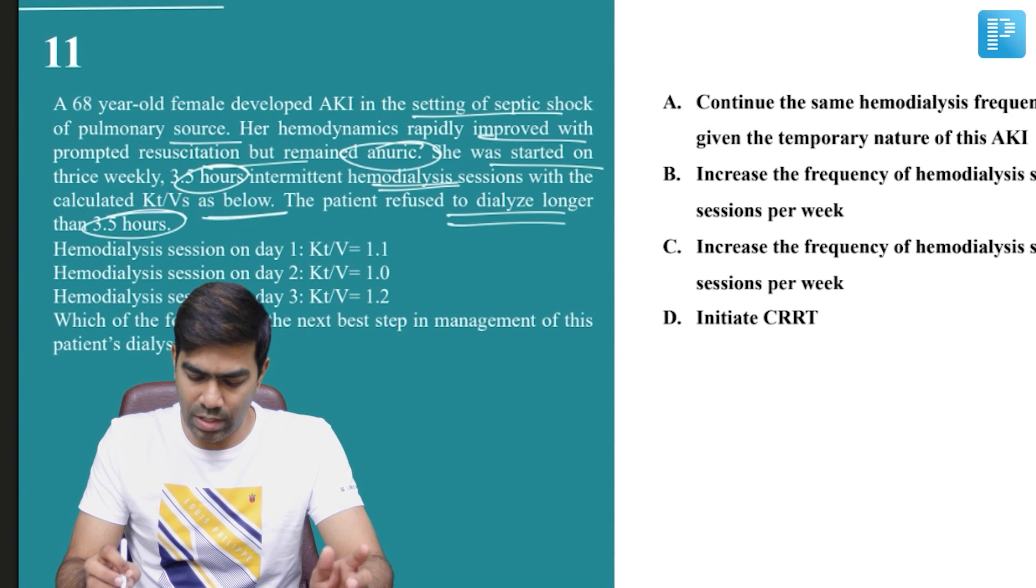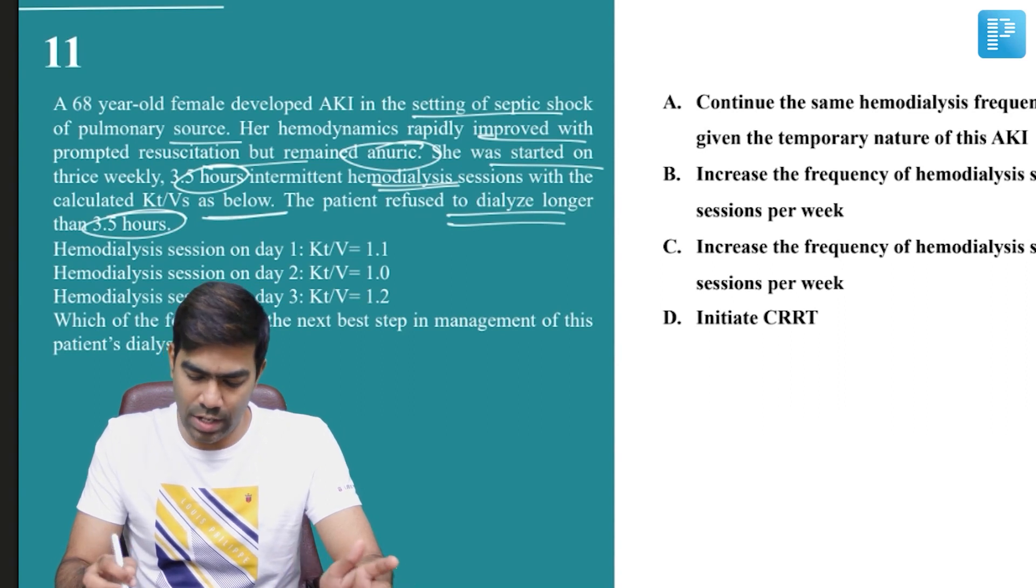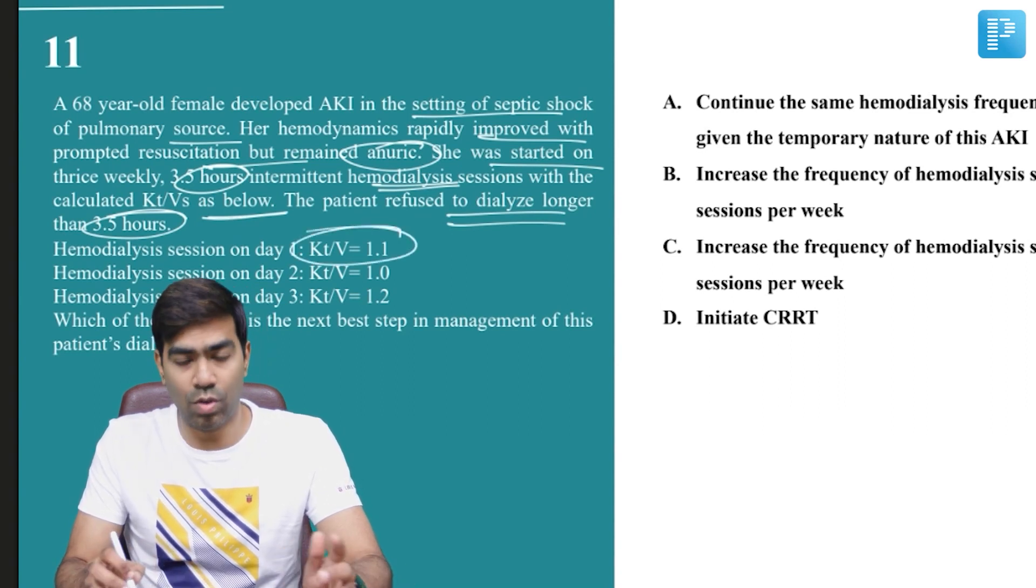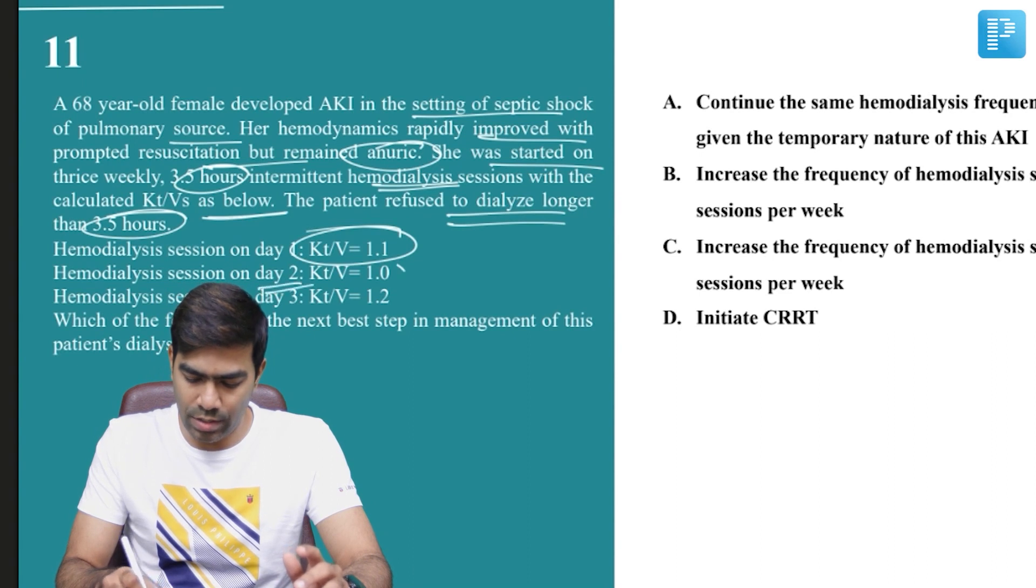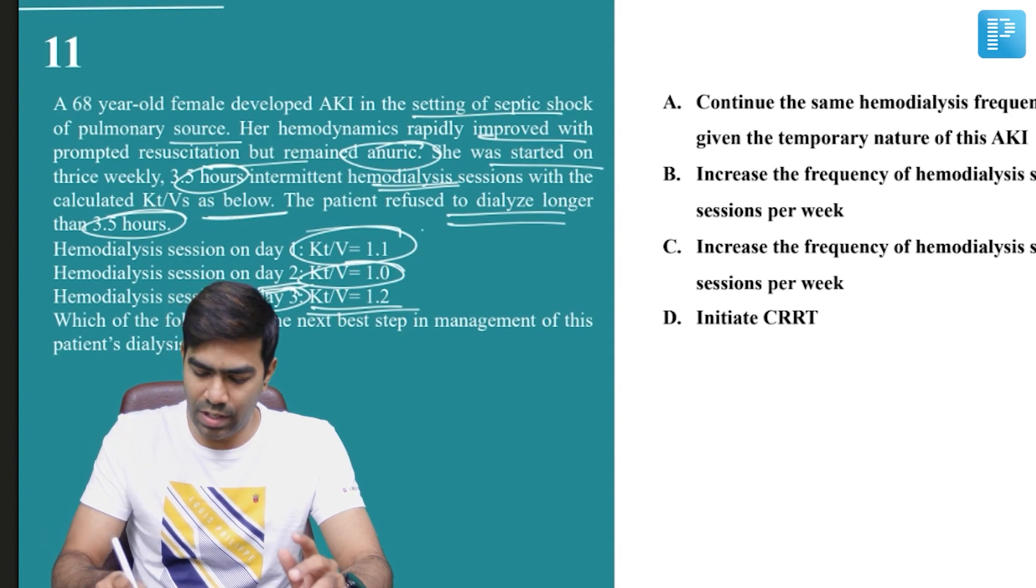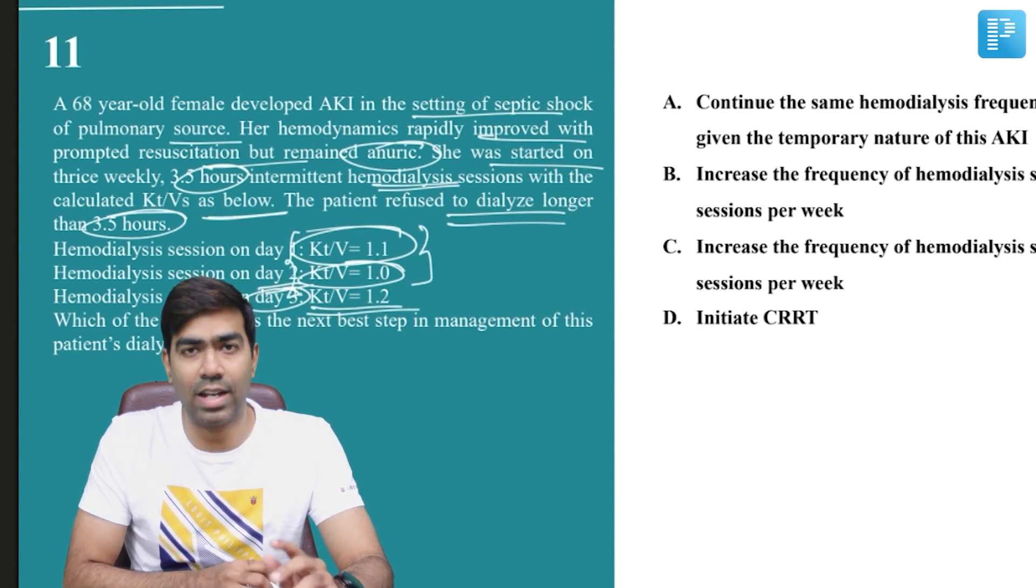The calculated KT/V values are as below. The patient refused to dialyze longer than three and a half hours. Look at the hemodialysis sessions: on day one, KT/V of 1.1; on day two, 1.0; and day three, 1.2. This clearly shows the patient is having under-efficient dialysis.